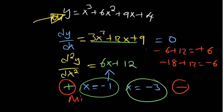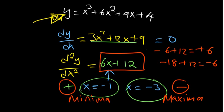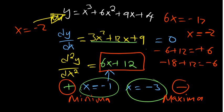For the point of inflection, we equate the second derivative to zero: 6x + 12 = 0, so x = -2. At x = -2, that is the point of inflection.